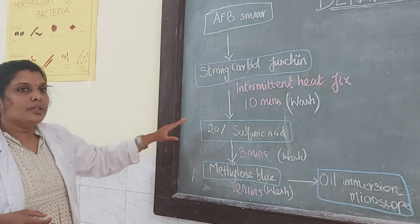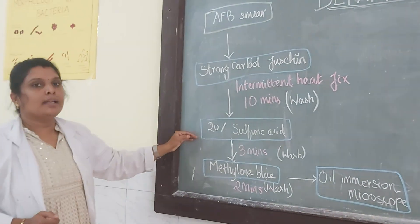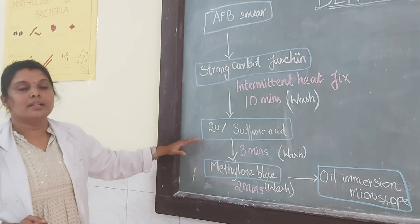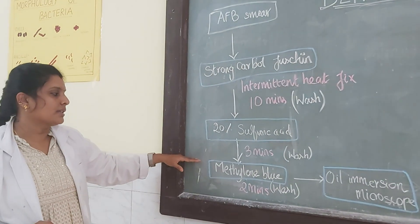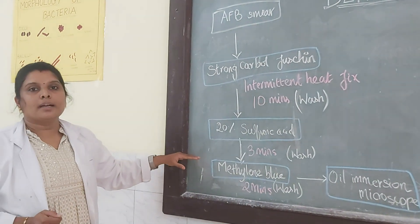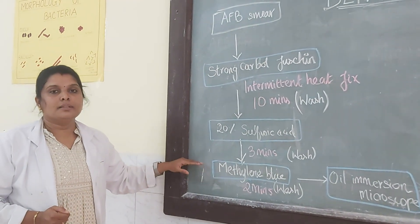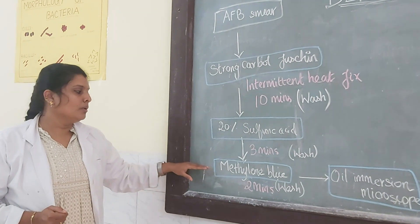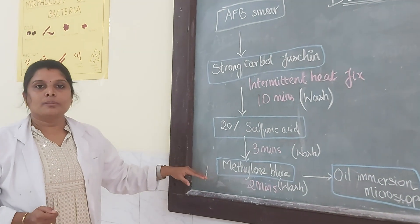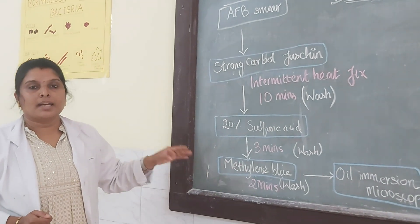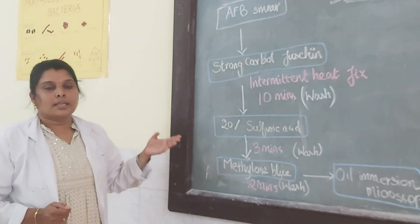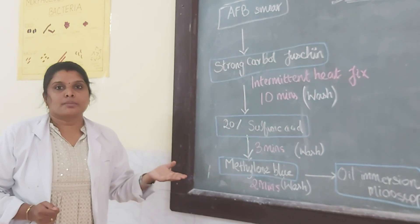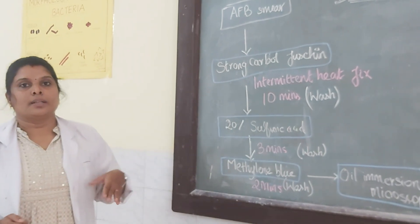After that, you need to wash it, then add 20% sulfuric acid and keep it for 3 minutes. Then wash it again. Then you will be adding the counterstain, which is methylene blue, and keep it for 2 minutes, then wash, air dry or blot dry.